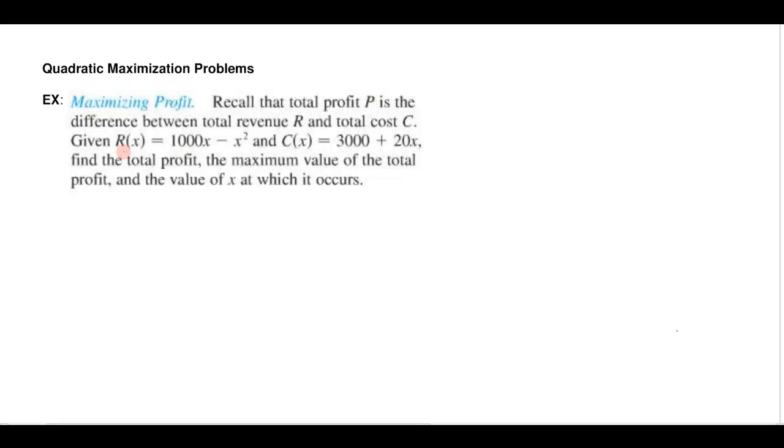And they give us a function. The revenue function is R(x) = 1000x - x², and we have a cost function C(x) = 3000 + 20x. And we're asked to find the total profit.